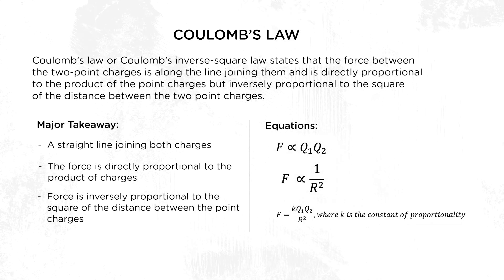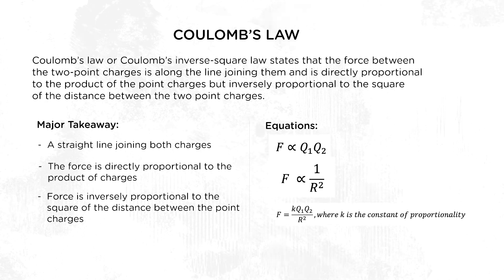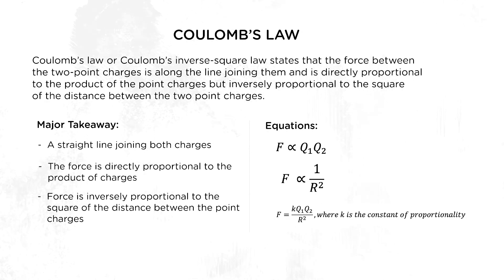All three statements can be used to derive a relationship between the force, the charges, and the distance between them. Depending on the position of the two charges, we can have two forms of our equation. If the charges have no position vectors, the first statement in Coulomb's law can be ignored. The second statement gives us: F is proportional to the product of Q1 and Q2. The last statement gives us: F is proportional to the inverse square of the distance r.